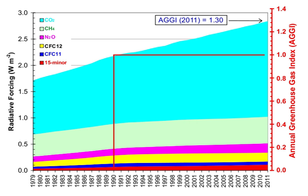A 2014 analysis states that although methane's initial impact is about 100 times greater than that of CO2, because of the shorter atmospheric lifetime, after six or seven decades the impact of the two gases is about equal, and from then on methane's relative role continues to decline. The decrease in GWP at longer times is because methane is degraded to water and CO2 through chemical reactions in the atmosphere. The use of CFC-12 has been phased out due to its ozone-depleting properties, and the phasing out of less active HCFC compounds will be completed in 2030.